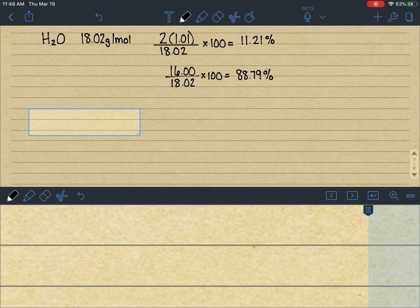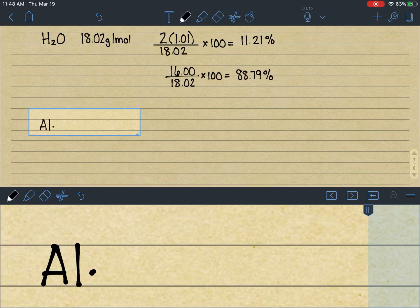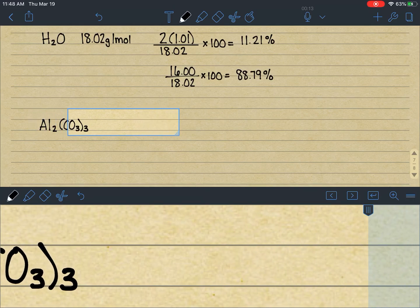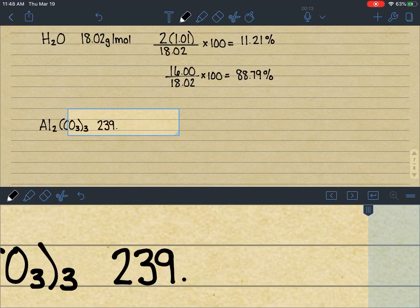All right, let's do one more example with something that's a little bit more complicated. Aluminum carbonate. So the formula for aluminum carbonate is Al2(CO3)3, and we had previously calculated out the mass of this to be 239.99 grams per mole.